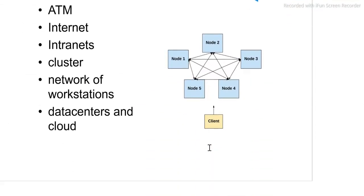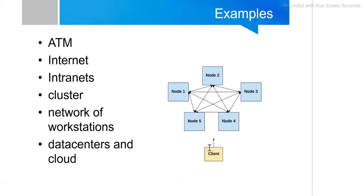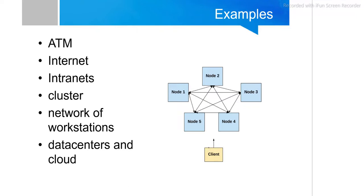Examples of distributed computing systems include ATM networks, where bank branches are connected and collaboratively compute their outputs. The internet, where groups of workstations are connected, as well as compute clusters, networks of workstations, data centers, and clouds are all important examples of distributed computing environments.